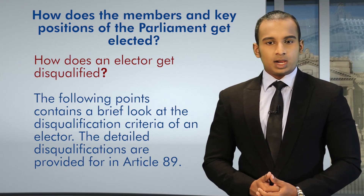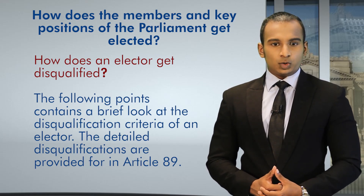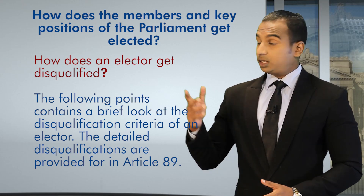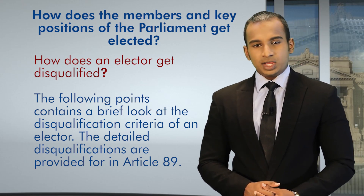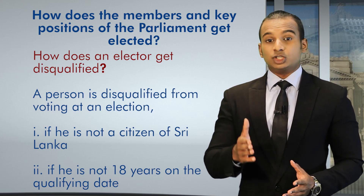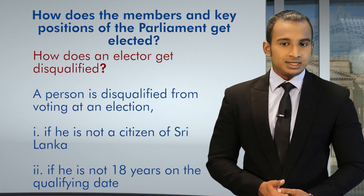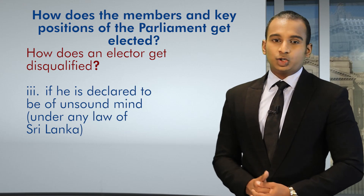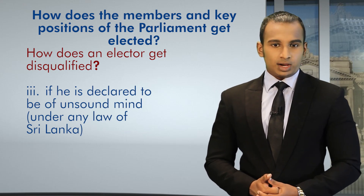Let's talk about how an elector gets disqualified. The following points contain a brief look at the disqualification criteria of an elector. The detailed disqualifications are provided for in Article 89. A person is disqualified from voting at an election: one, if he is not a citizen of Sri Lanka; two, if he is not 18 years of age on the qualifying date; and three, if he is declared to be of unsound mind under any laws present in Sri Lanka.